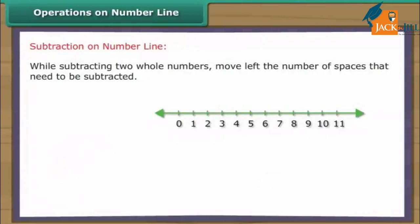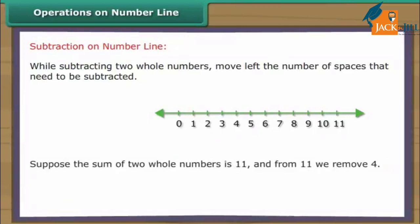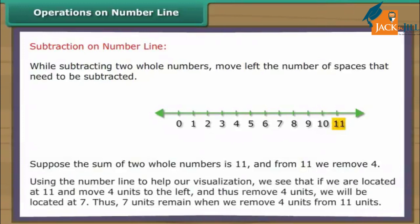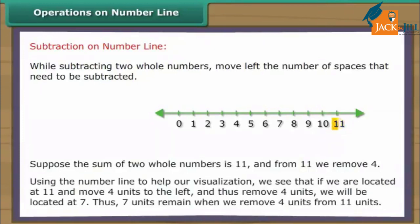Subtraction on number line. While subtracting two whole numbers, move left the number of spaces that need to be subtracted. Suppose the sum of two whole numbers is eleven, and from eleven we remove four. Using the number line, if we are located at eleven and move four units to the left, we will be located at seven. Thus, seven units remain when we remove four units from eleven units.